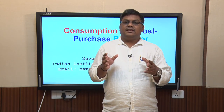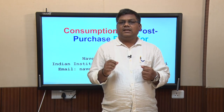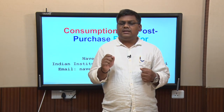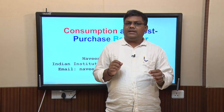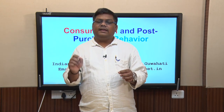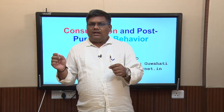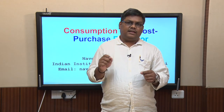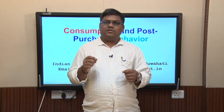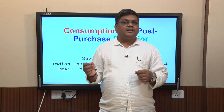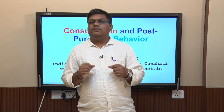We also looked at the mathematical model the consumer uses to actually decide which product to buy — how he does the comparison using determinant attributes, including compensatory and non-compensatory models. After that, in the seventh lecture, we looked at a number of variables which affect the consumer's final choice — not only product choices but also outlet choices — and how the consumer finally zooms in on a particular product.